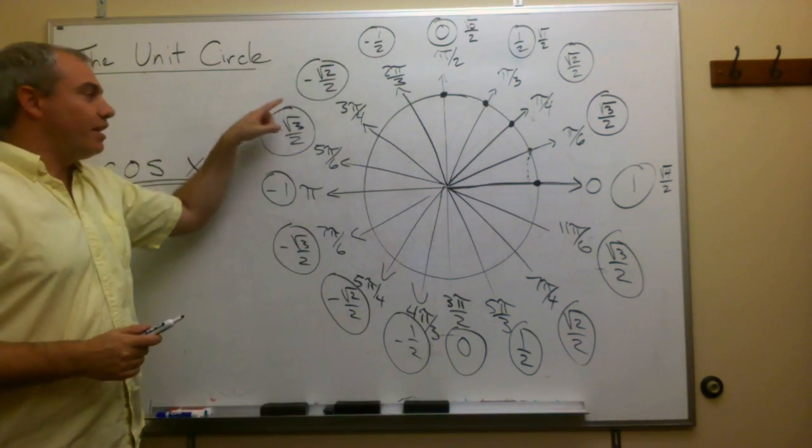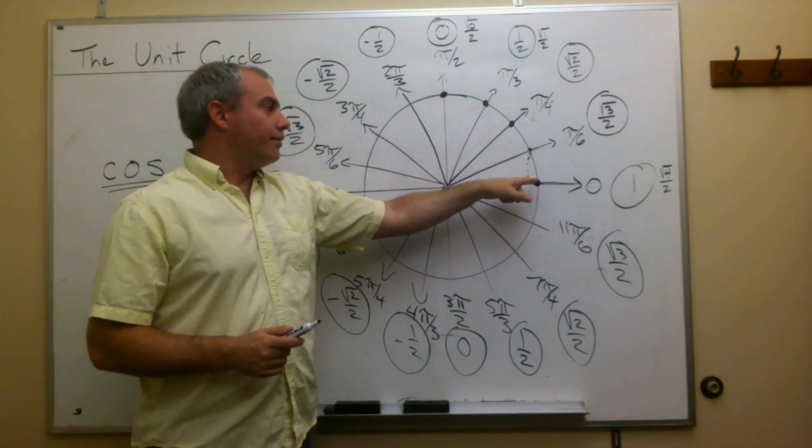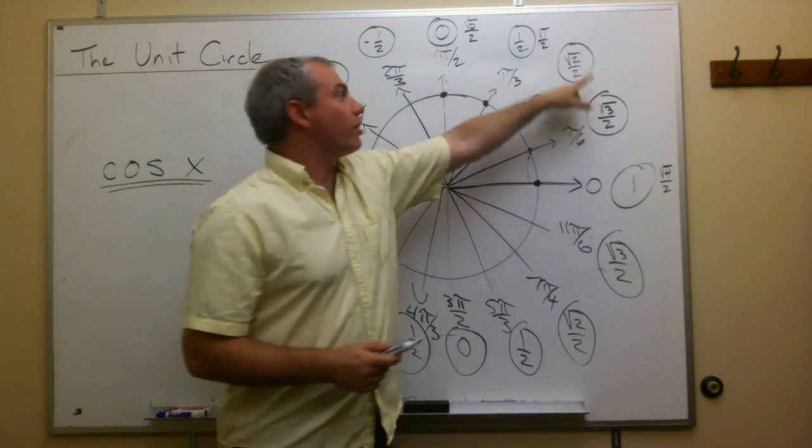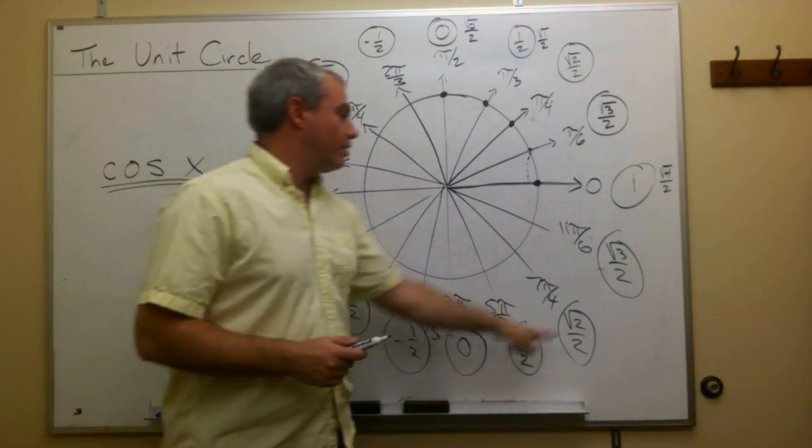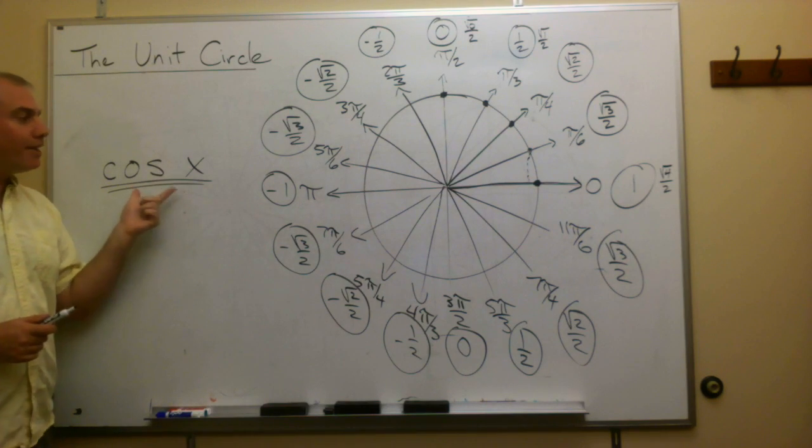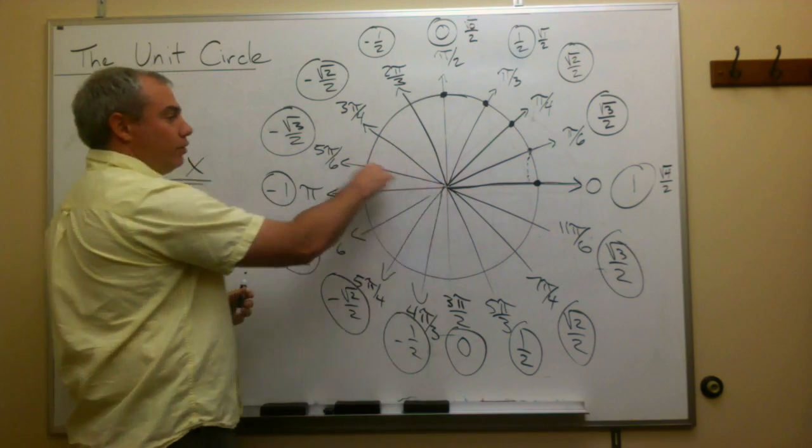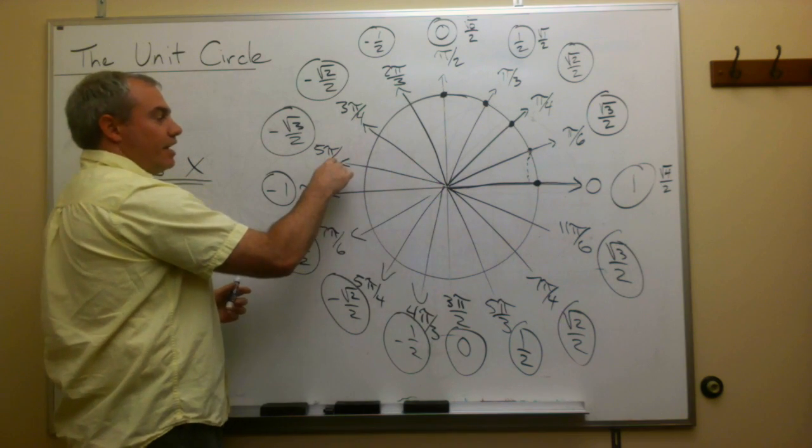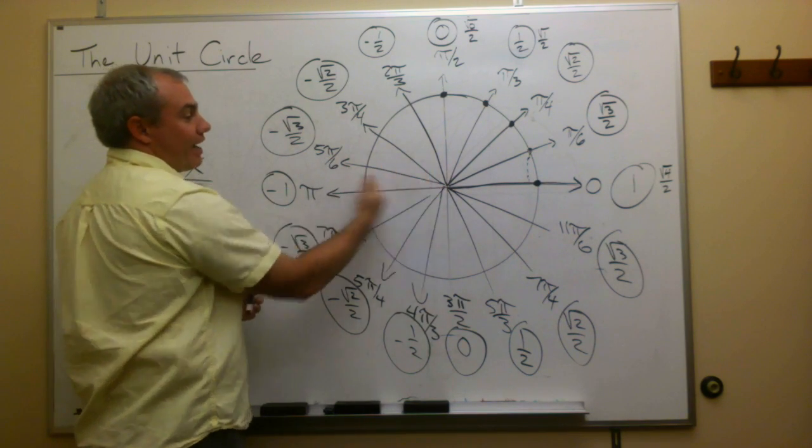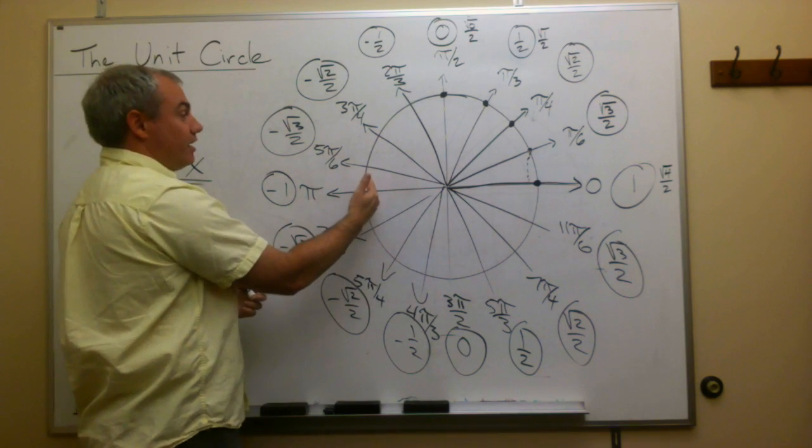So here I've listed every angle of importance on the unit circle and their cosine values at those angles. So if I ask you something like, what is the cosine of 5 pi over 6? Then you look at the angle 5 pi over 6, and you say, oh, the x value is negative. Cosine cares about x. The x value is negative.